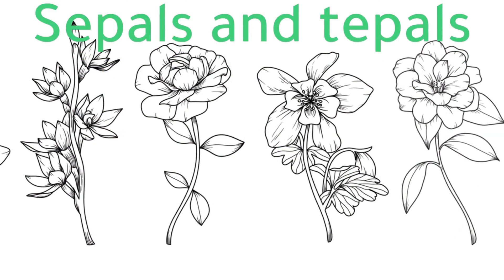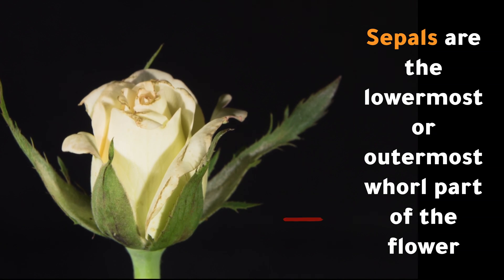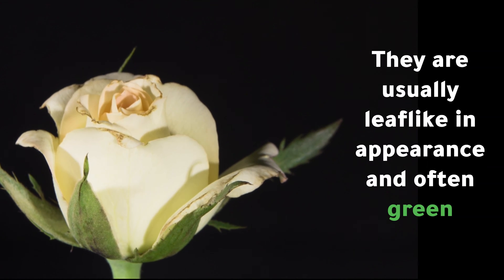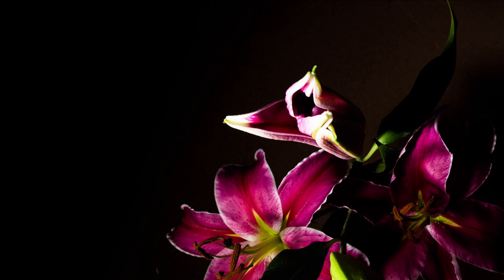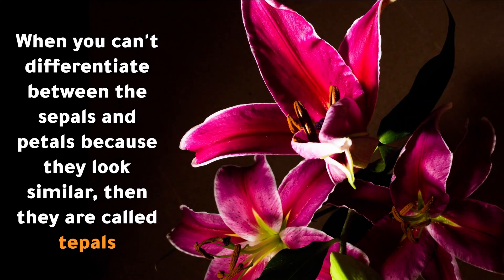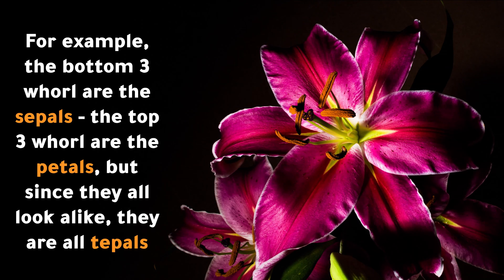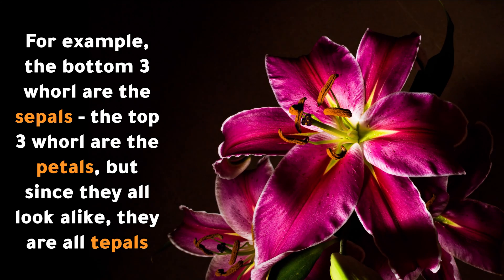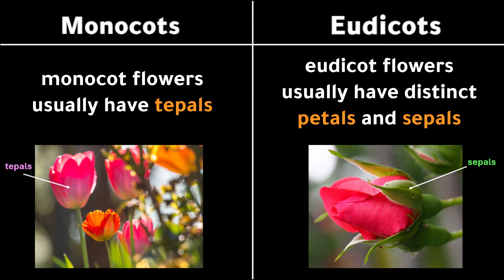Sepals are the lowermost or outermost floral part of the flower. They cover and protect the flower parts in the bud and are usually leaf-like in appearance and often green. When you can't differentiate between the sepals and petals because they look similar, they are called tepals. Monocot flowers usually have tepals, and eudicot flowers usually have distinct petals and sepals.